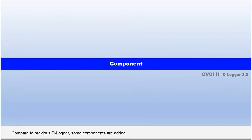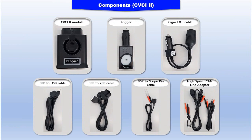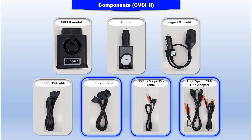Component. Compared to the previous Dlogger, a few components are additionally included in CVCI 2. CVCI 2 consists of the CVCI 2 module, trigger, CIGR extension cable, 30-pin to USB cable, 30-pin to 20-pin cable, 30-pin to scope pin cable, and high speed CAN line cable.